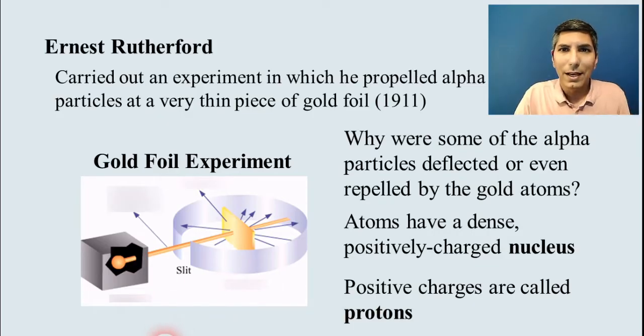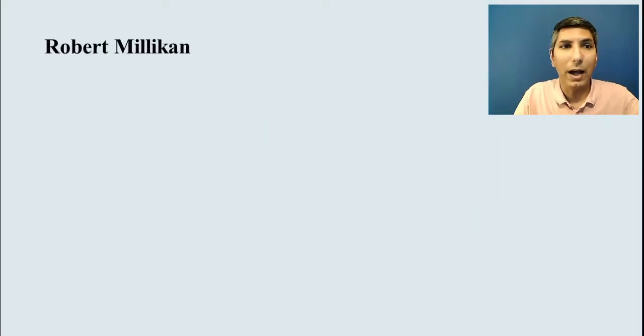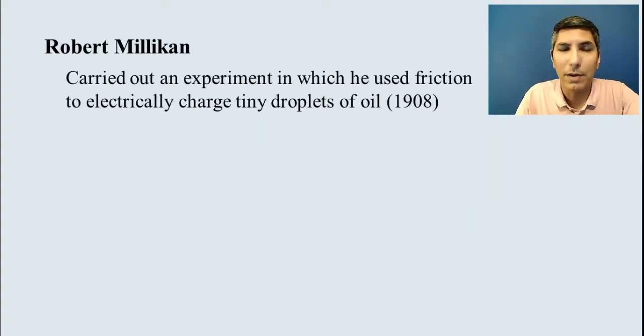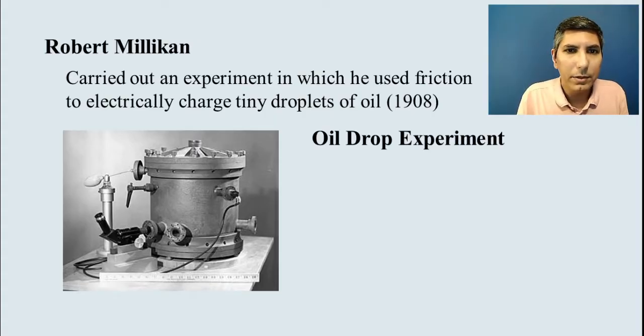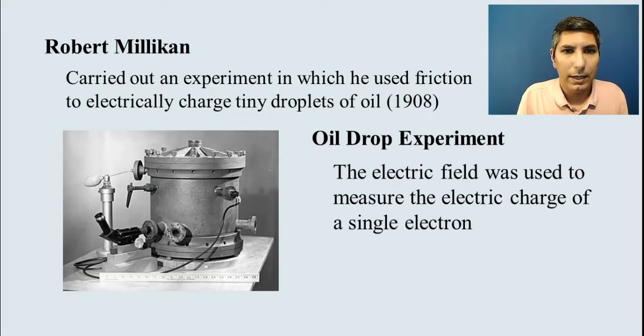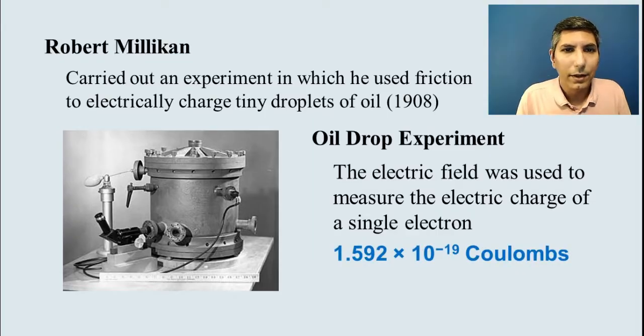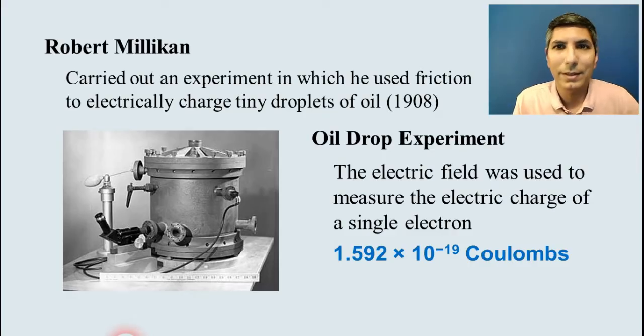So slowly this understanding of the atom is being revised and refined. Now, we go backward a few years and we have Robert Millikan. And he actually was focused on the electrons. He used something called the oil drop experiment where he charged up these little tiny droplets of oil and he was able to determine the charge of an individual electron. And he used this electric field in order to do that. So he calculated that the electric charge of one electron was about 1.592 times 10 to the negative 19th coulombs. Very ingenious experiment for all the way back there in 1908.